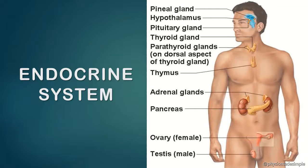Exocrine glands secrete juices and enzymes that help in digestion. Endocrine glands secrete hormones. These hormones are released into the blood, and blood is the transporting medium.